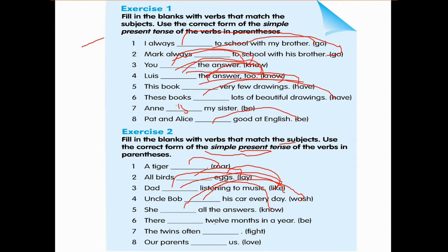There are 12 months in a year. There are. There are. Be means is, are, was, or were. So there are 12 months in a year.